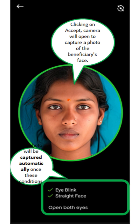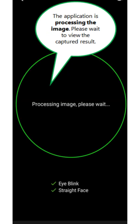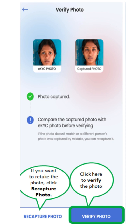If you want to capture the beneficiary, you can capture it. If you want to see a photo, you can see it in the description. The photo is captured. You can see it in the description — the message is the application processing image. Please wait. This photo is captured, the next page is taken. If you want to capture the photo, click on the capture photo.